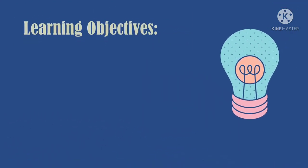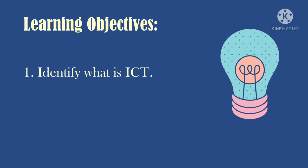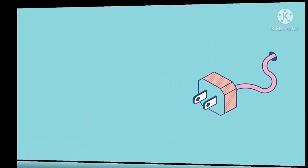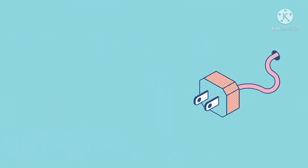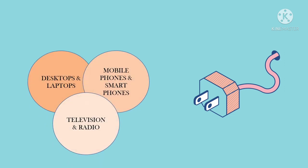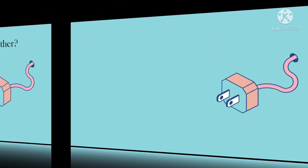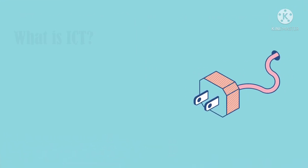At the end of this lesson, we will: first, identify what is ICT; and second, explain and give examples of how ICT affects everyday lives and its current state. Before we proceed, I have here a Venn diagram — analyze how each one is similar to the other. To formally start our discussion, using your own words, what is ICT?